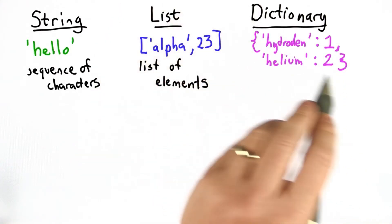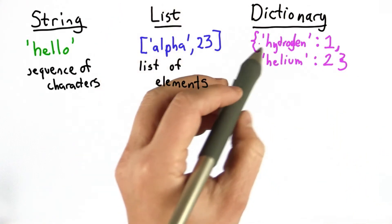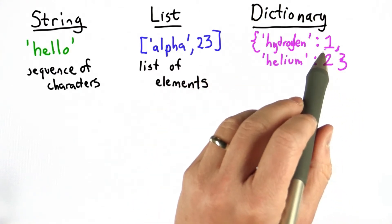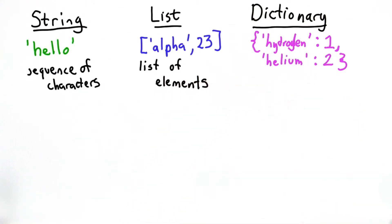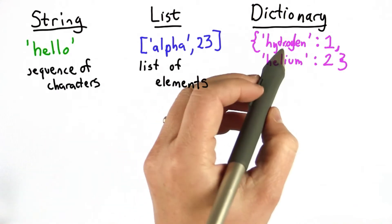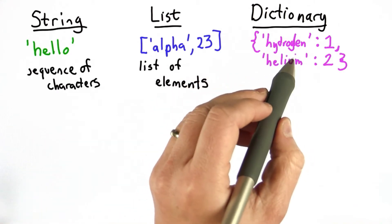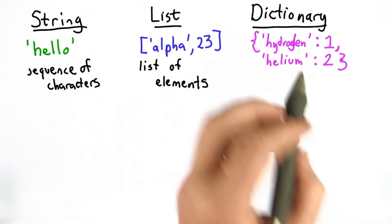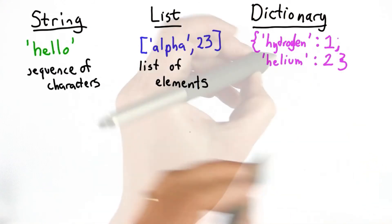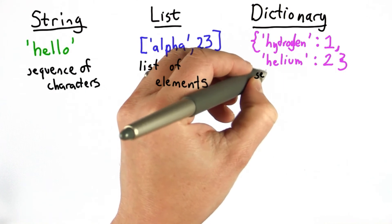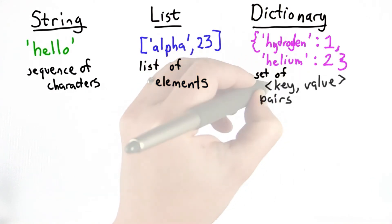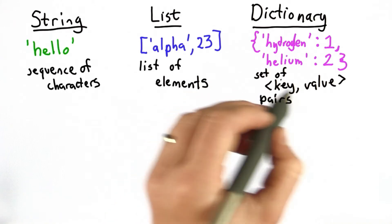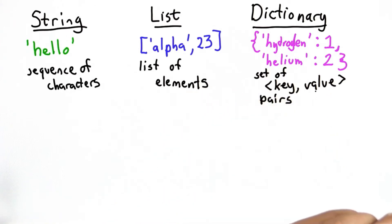The entries inside a dictionary are key-value pairs. Here I've created a dictionary with two elements, and each element's key is a string — for example, the string 'hydrogen' — and the value associated with that element is a number. The keys in a dictionary can be any immutable value, so they don't need to be strings; they could be numbers or other things. The values can be any value. So a dictionary is a set of key-value pairs, and like the hash table, we can look up a key and get the value associated with that key.